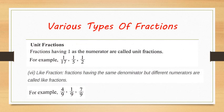Unit fraction: a fraction having 1 as the numerator is called a unit fraction. For example, 1 by 17, 1 by 5, and 1 by 2 — all these are said to be unit fractions.